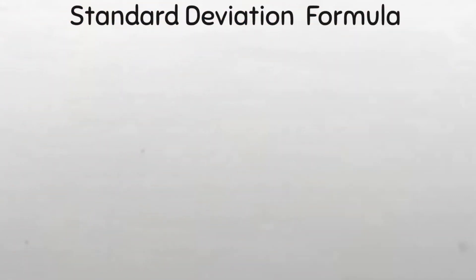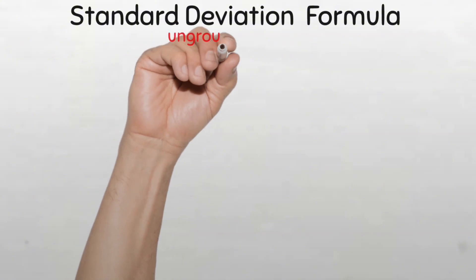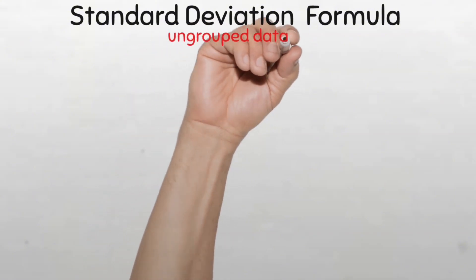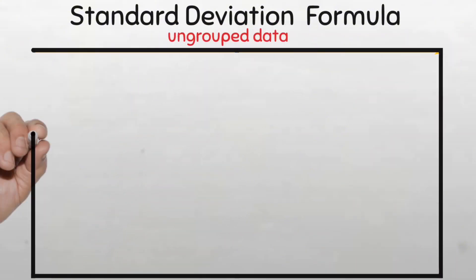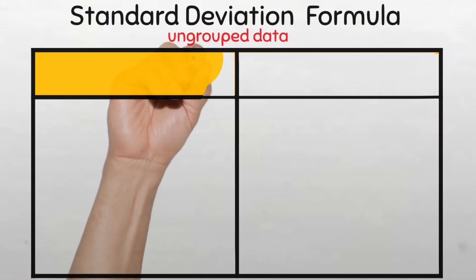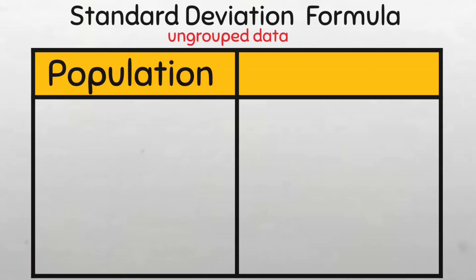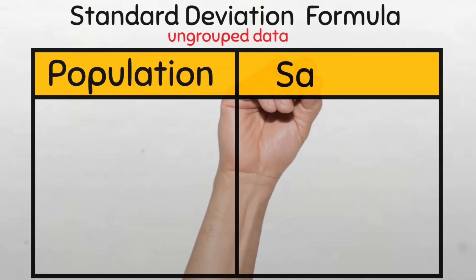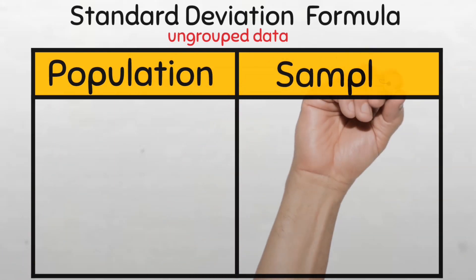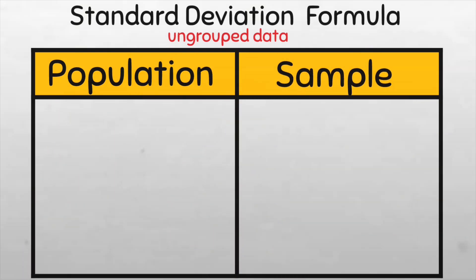The formula for standard deviation for ungroup data of a population is slightly different from that of a sample. In this video, I will show you both formulas and I want you to spot at least five differences between that of a sample and that of a population.